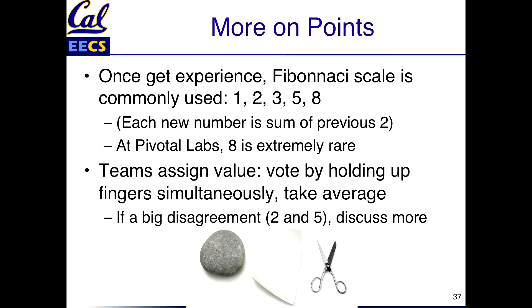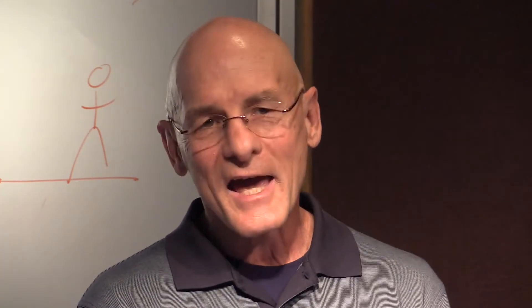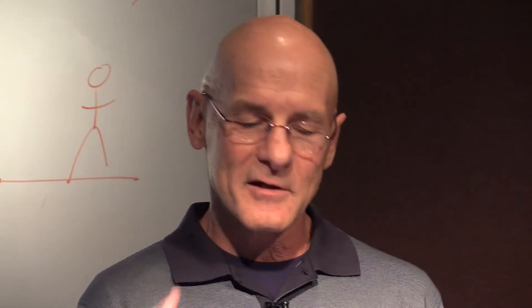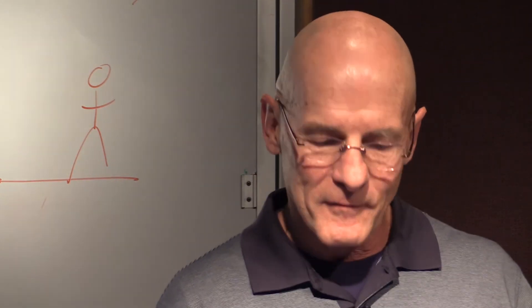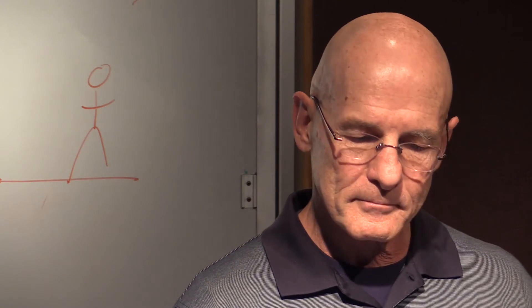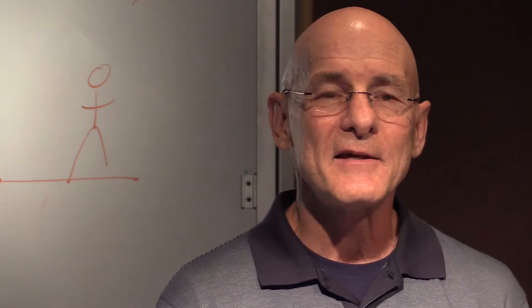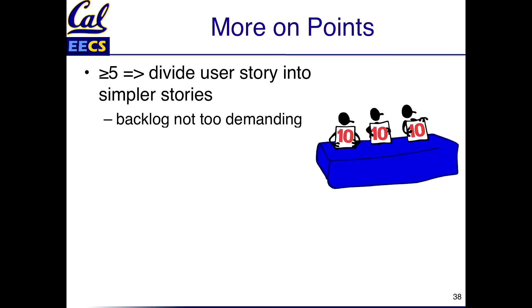If one person says two, which is medium, and another says five, which is really hard, you don't just average those. You stop — there's a disagreement, some difference in assumptions or experience. You want to talk this out before moving forward. Our advice is that if anything is more than five, you should divide it into simpler stories. You don't want a big monster on the backlog that nobody wants to work on, so break it up into smaller stories.